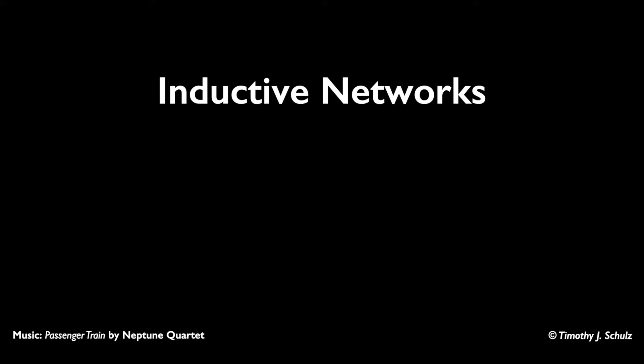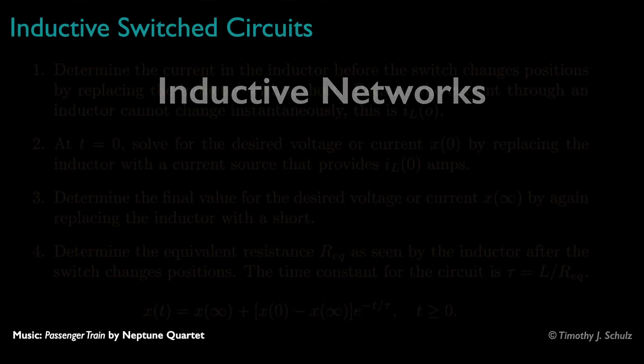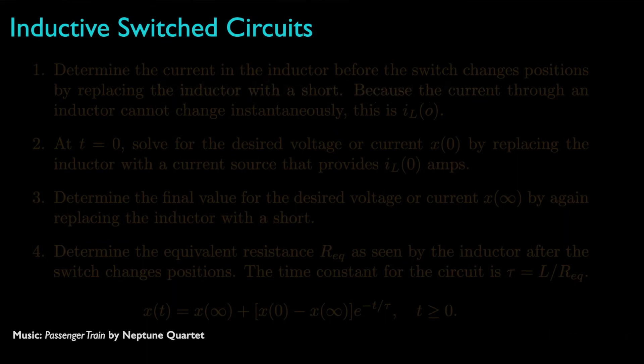In this lesson, we continue our discussion of first-order switch circuits by examining circuits that contain sources, resistors, and one inductor. The systematic method for analyzing a switched circuit with DC sources and one inductor is similar to the method we use for circuits with a single capacitor.